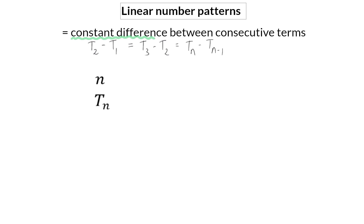n and Tn occur in all the number pattern formulas. n indicates the position of a specific term in the row, and Tn indicates the value of a specific term. Tn is equal to bn plus c.